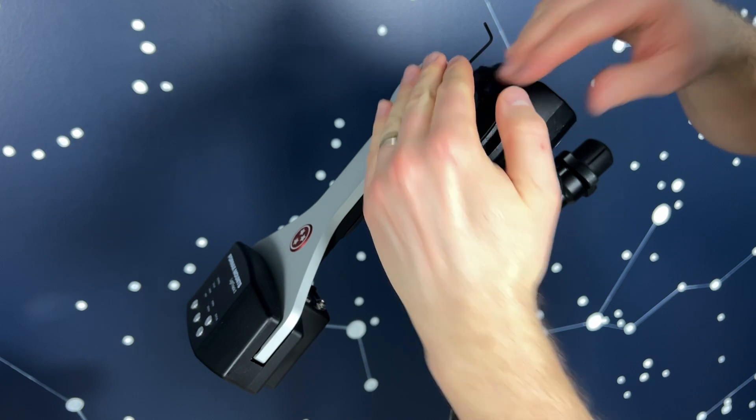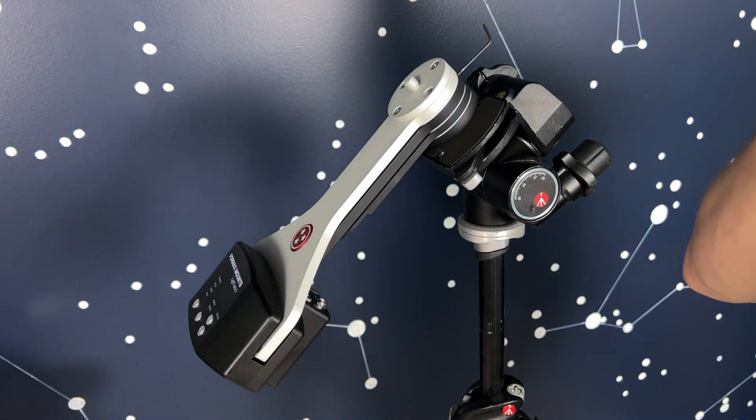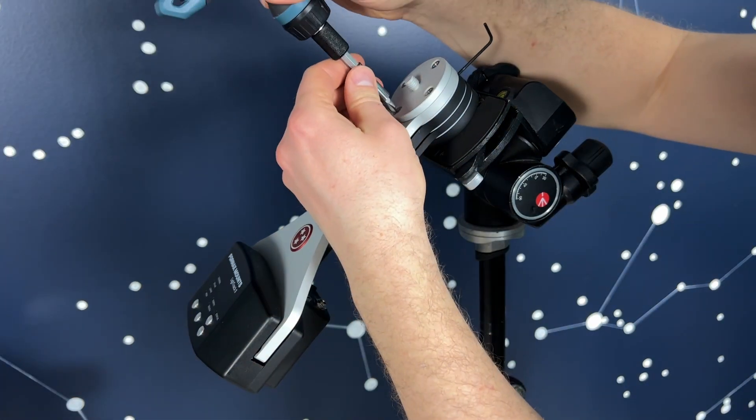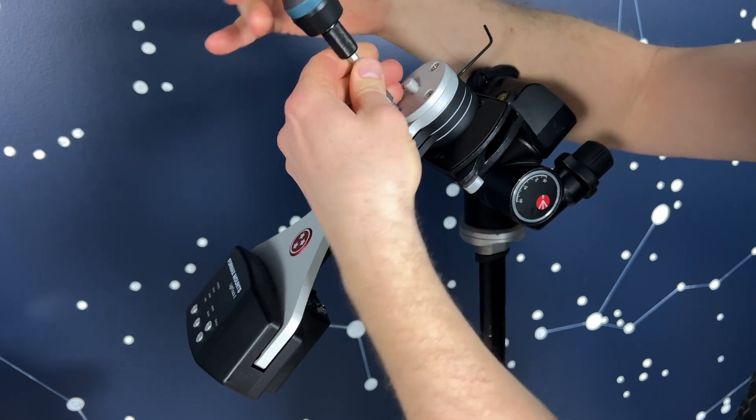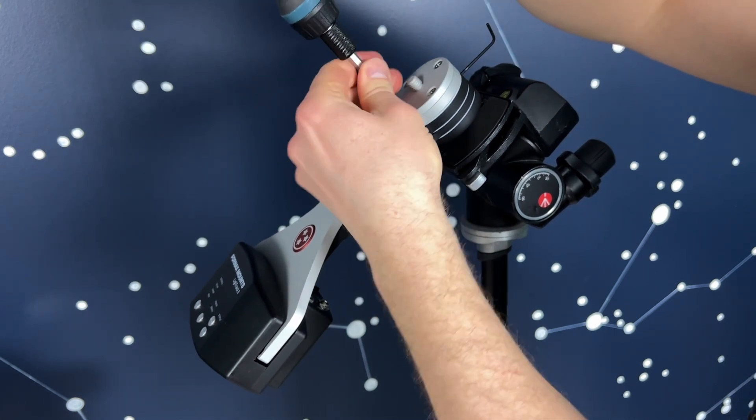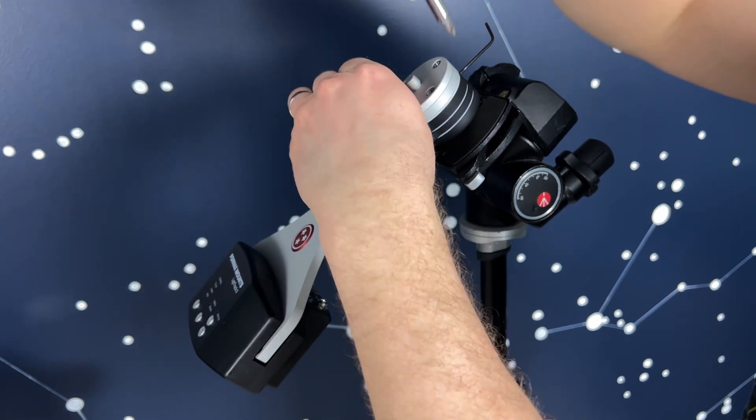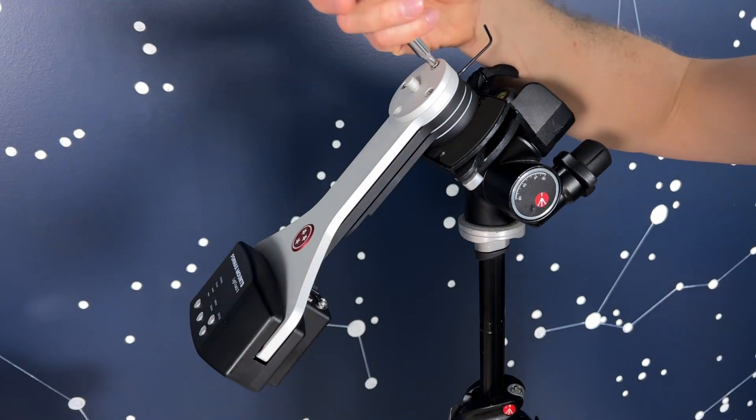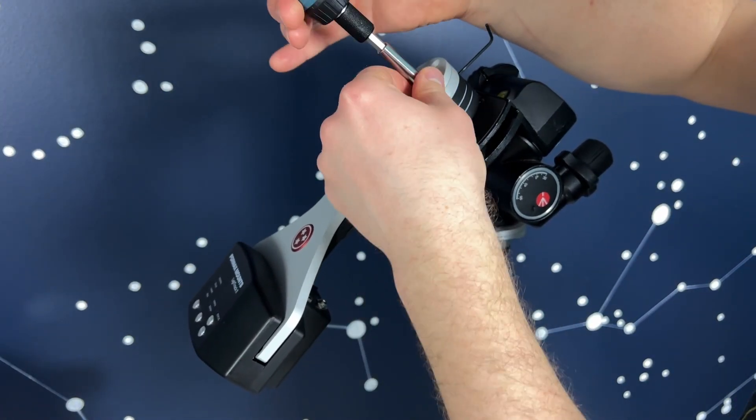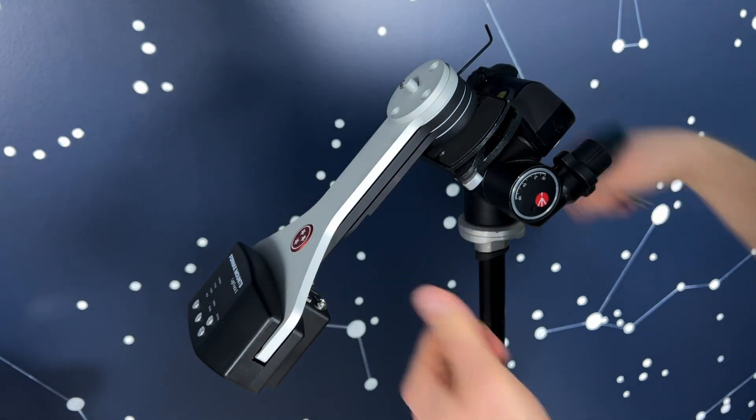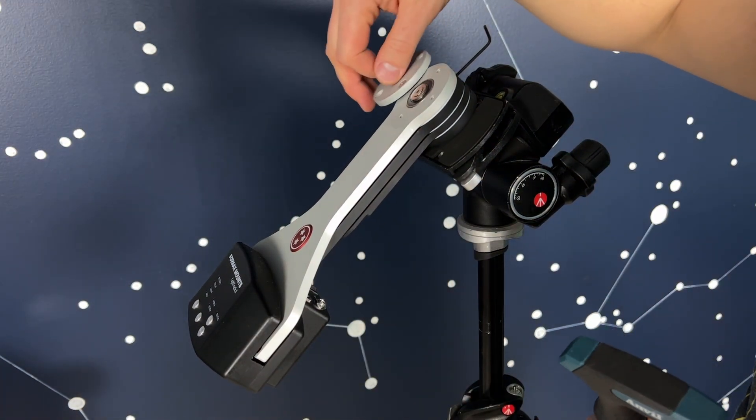Next we'll take our screwdriver here and we will remove all four screws. Sometimes I like to leave one in place so you can just swing this out of the other way here.